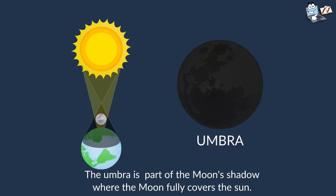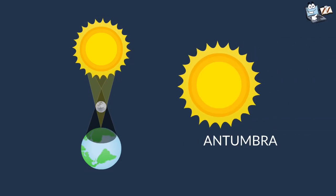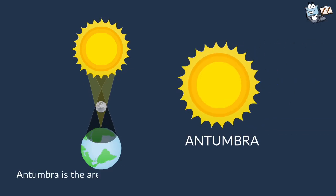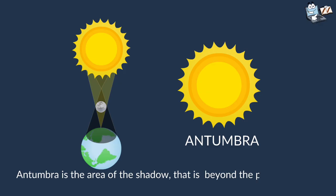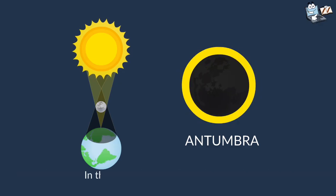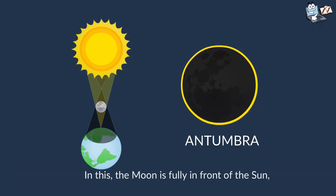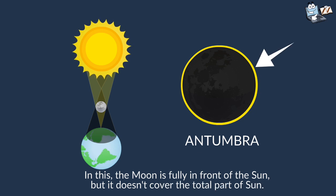It is the area of the shadow that is beyond the point of Umbra. In this, the moon is fully in front of the sun, but it doesn't cover the total part of the sun. The outline of sun can be seen around the shadow of the moon.